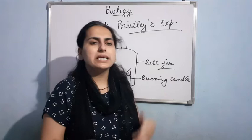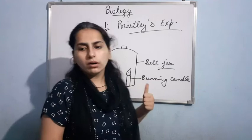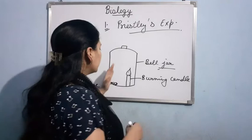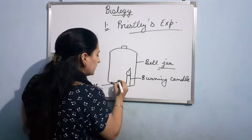And that's why, as a result, after some time the component of air got properly damaged, and as a result the candle got extinguished and the mouse died. Now, in the second setup, what he did — along with the burning candle and the mouse, he took a mint plant, and then he placed the mint plant in the same setup.